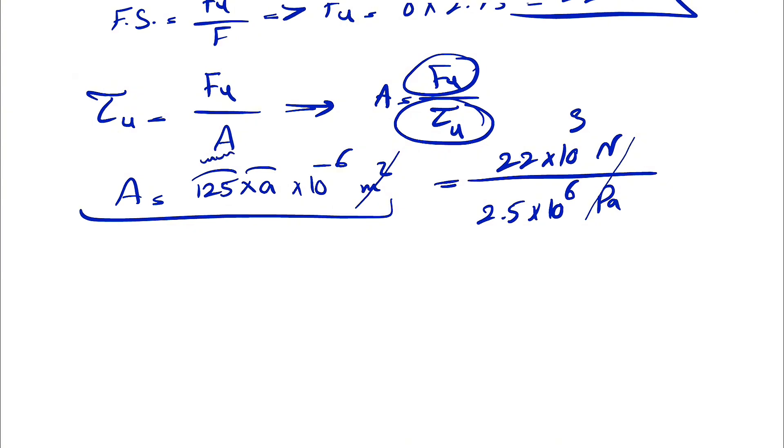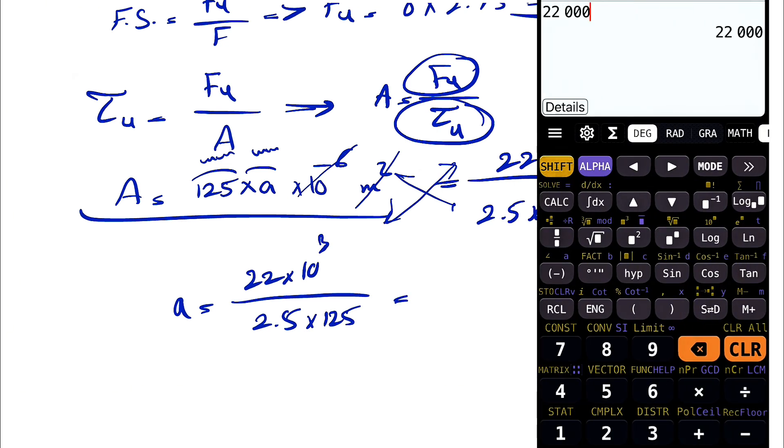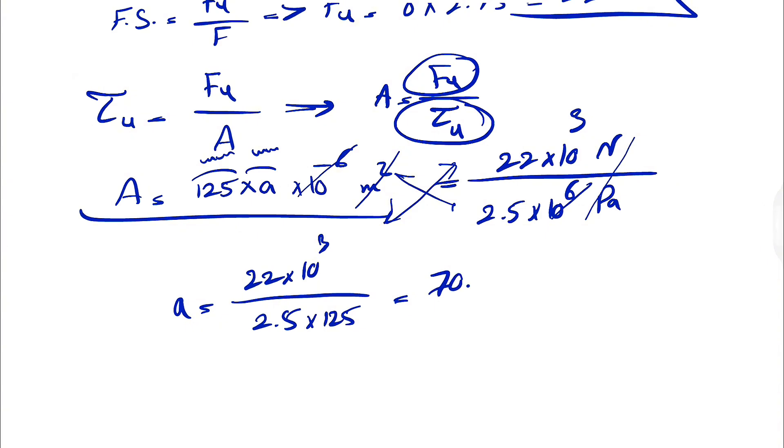This one's based on millimeters, so our A has to be millimeters as well. All we need to do is find A, which will be basically 22 times 10 to the 3 over 2.5 times 125. Let's see what we get for A: 22,000 divided by 125 divided by 2.5, that's going to give us 70.4 millimeters.